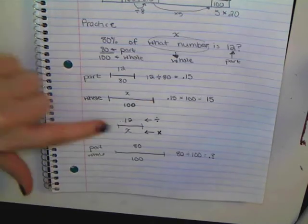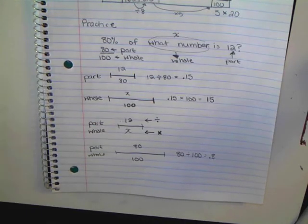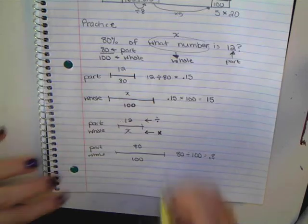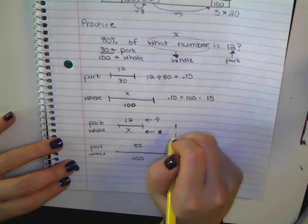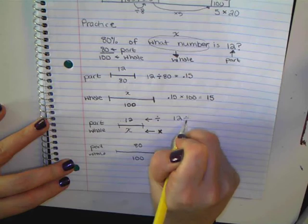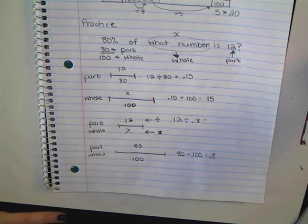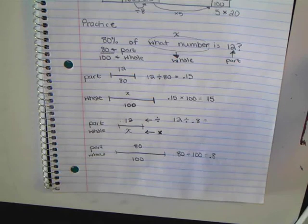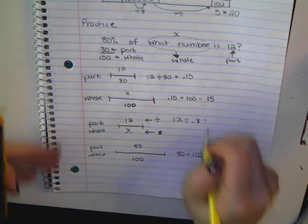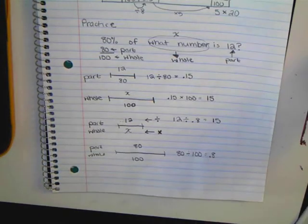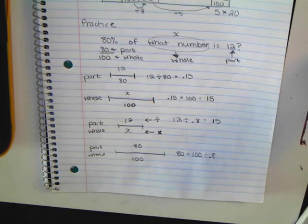Okay. So my number that I know is on top. So which operation am I going to do? Divide. Divide. So I'm going to do 12 divided by 0.8. And what do I get? 12 divided by 0.8. What do you get? 15. Okay. 12 divided by 0.8 is 15.